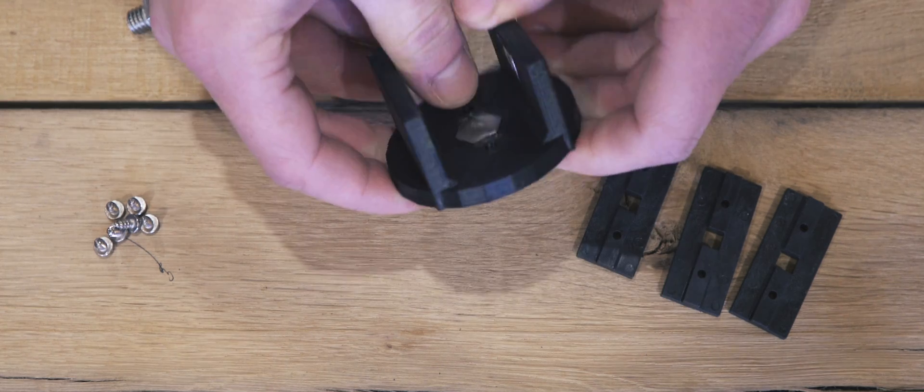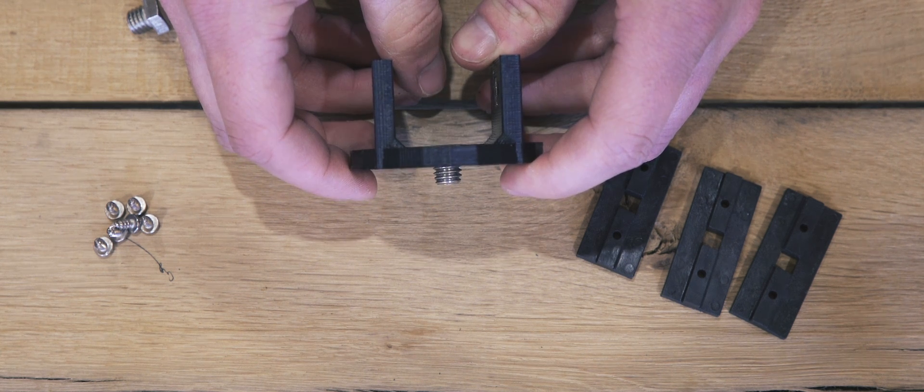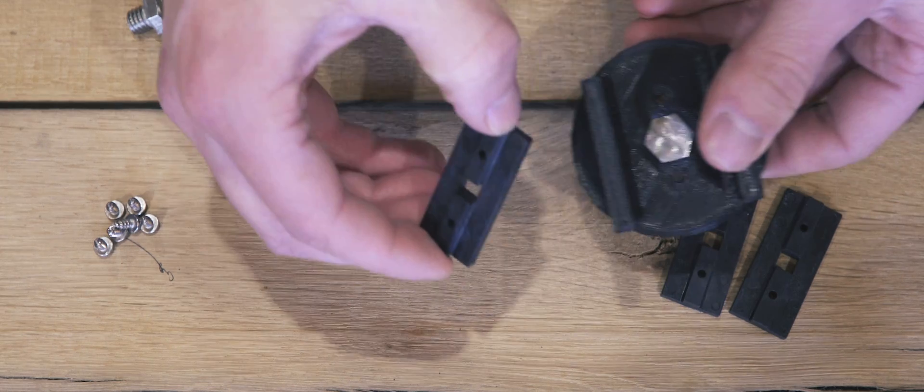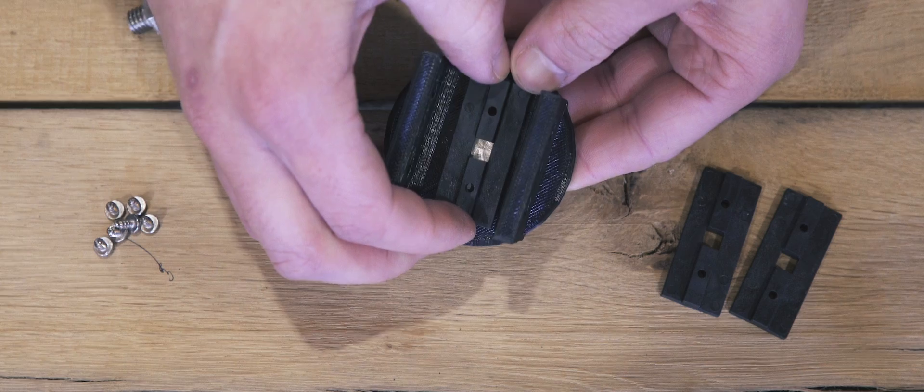The hex bolt doesn't have to be glued in, but you can if you want to. The linear bearing underneath will actually hold it in place, and that's what we're going to put on next.